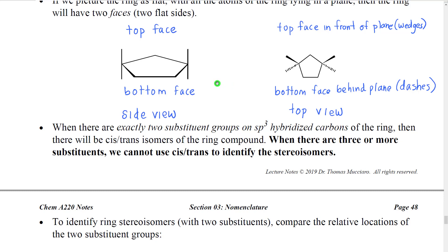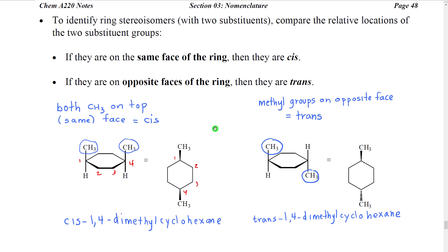When we have exactly two substituent groups on different SP3 hybridized carbons — in other words, different tetrahedral carbons of the ring — we will have cis-trans isomers of the ring compound. When there are three or more substituents, we cannot use cis-trans. To identify the ring stereoisomers, when we have exactly two substituents on two different atoms of the ring, we compare the relative locations of the two substituent groups. So we look at our drawing of the ring, identify the substituents — for example, this methyl and that methyl — and if they're both pointing up, they must both be on the top face of the ring, so we say they're on the same face.